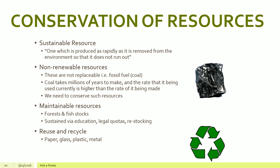A sustainable resource is one which is produced as rapidly as it is removed from the environment so that it does not run out. A non-renewable resource is something we can't replace — fossil fuels are a good example. Coal takes millions of years to make and at the rate we use it, it will eventually run out. We need to conserve these resources and maintain resources like forests and fish stocks, which can be sustained via education, legal quotas, and restocking. We should also recycle materials like paper, glass, plastic, and metals.